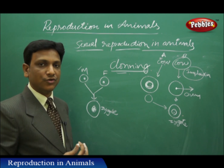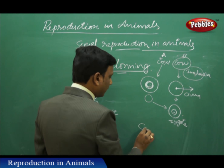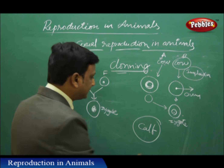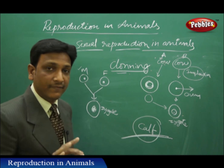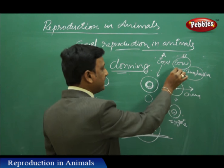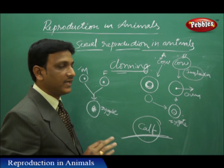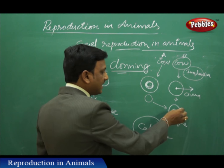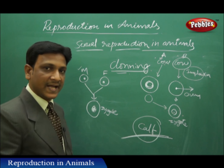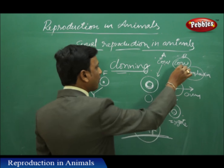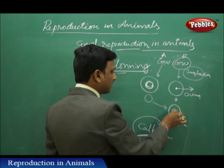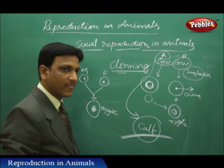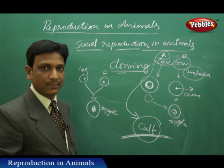The zygote develops into a fetus and then into a calf. When the calf is born, it is the exact replica and copy of cow A — it will not have any characteristics of cow B, even though it grew in cow B's uterus. The characteristics are decided by the nucleus, and the nucleus completely belongs to cow A, so the calf is an exact copy of cow A.